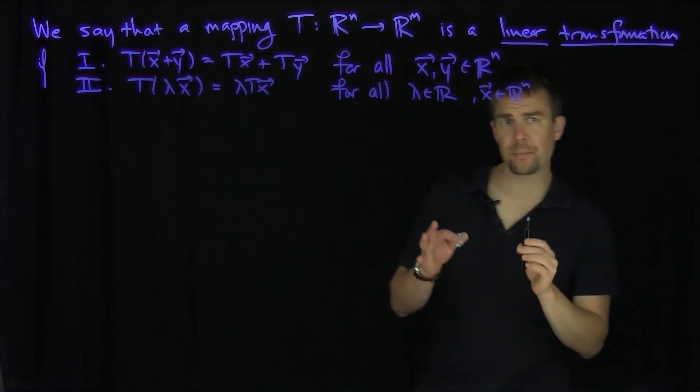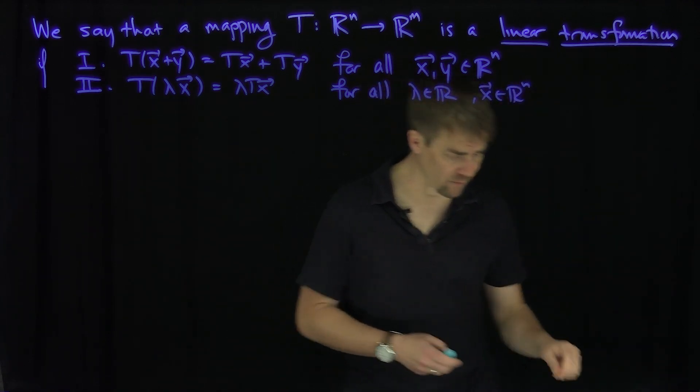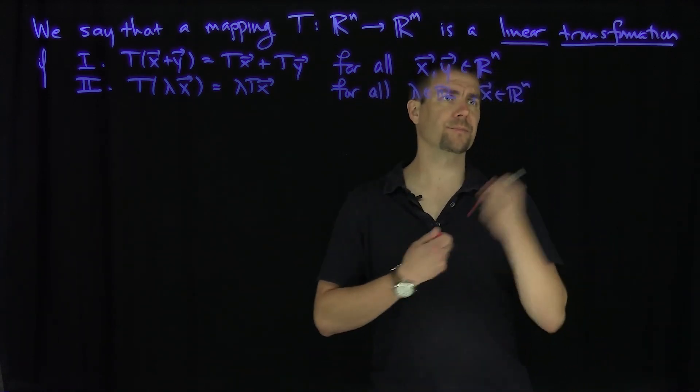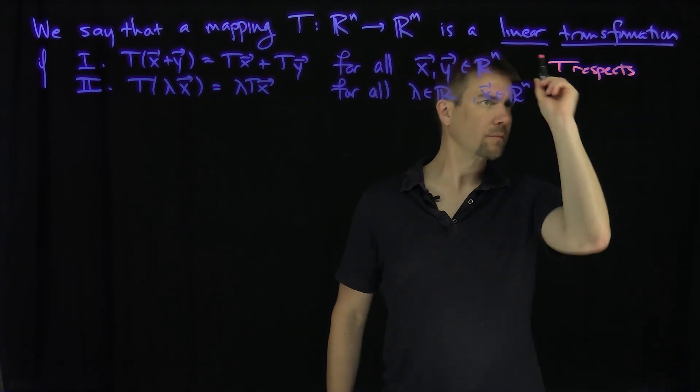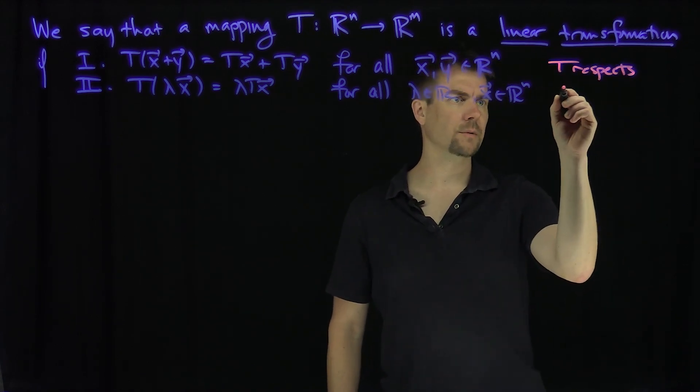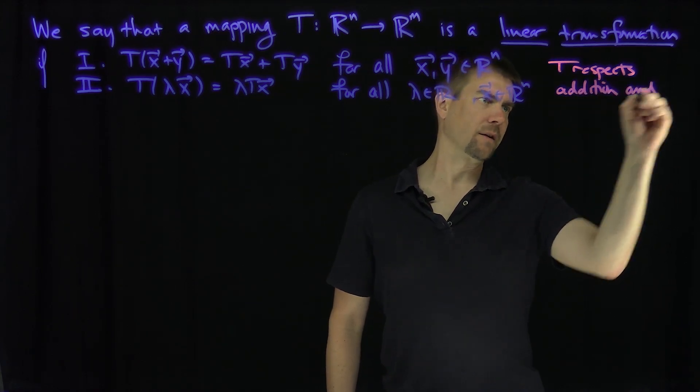In other words, these two properties together tell me that T respects the vector space structure on R^n. This respects addition and scaling.